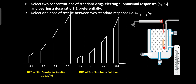Select two concentrations of standard drug eliciting submaximal responses, S1 and S2, bearing a dose ratio of 1:2 — that is, 0.4 divided by 0.2 equals 2. Then select one test dose T, such that the response of T lies between the two standard responses: S1 response (mm) less than T response, and T response less than S2 response. This method of selecting two standard responses and one test response is known as the three-point bioassay method.